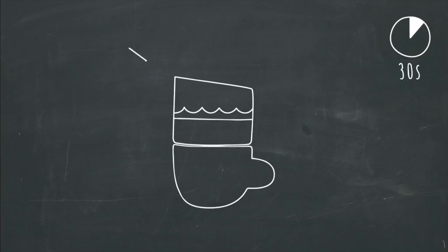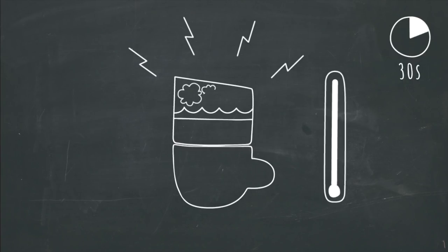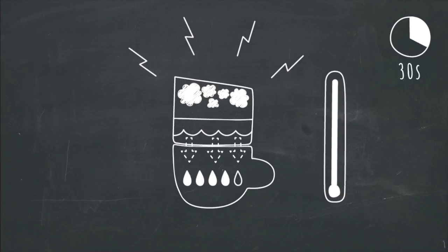First, microwaves heat the water. Next, steam pressure builds up to press the hot water through the espresso pad straight into your cup.